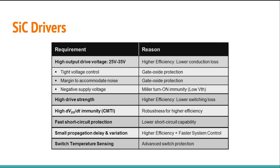Silicon carbide MOSFETs typically have a low threshold voltage, and during incidents called Miller turn-on, these MOSFETs are unintentionally turned on when enough charge is transferred into the gate. To negate this, silicon carbide MOSFETs are driven with a negative gate-to-source voltage. When the MOSFET is off, the gate voltage is below the source voltage, and in this case much more charge is required at the gate for a false turn-on to occur.